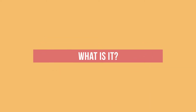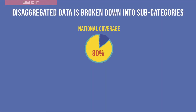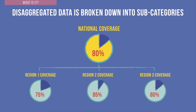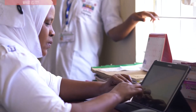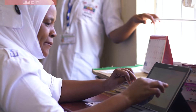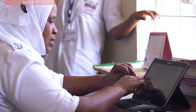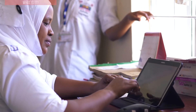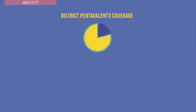What are sex disaggregated and gender-related data? Disaggregated data is data that has been broken down into specific subcategories. For example, you may look at your national coverage rates disaggregated or broken down by regions or districts. Sex disaggregated data breaks down data by sex. Sex is typically assigned at birth and refers to the biological characteristics that define people as female or male. For example, you may look at your coverage data broken down by girls and boys.